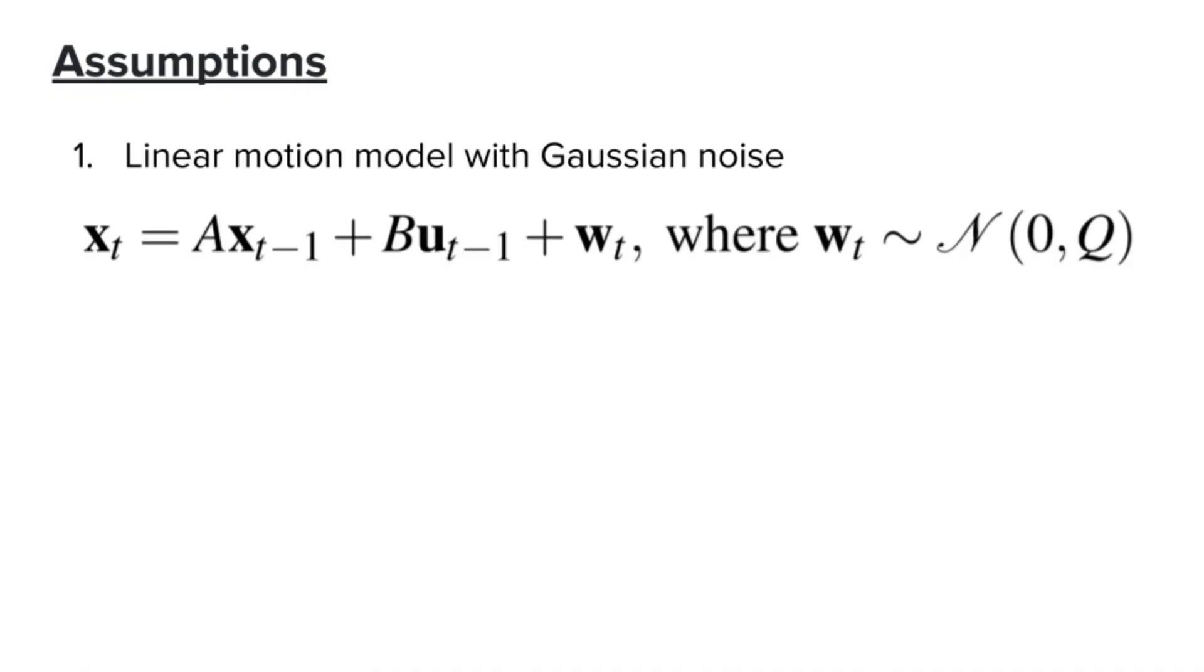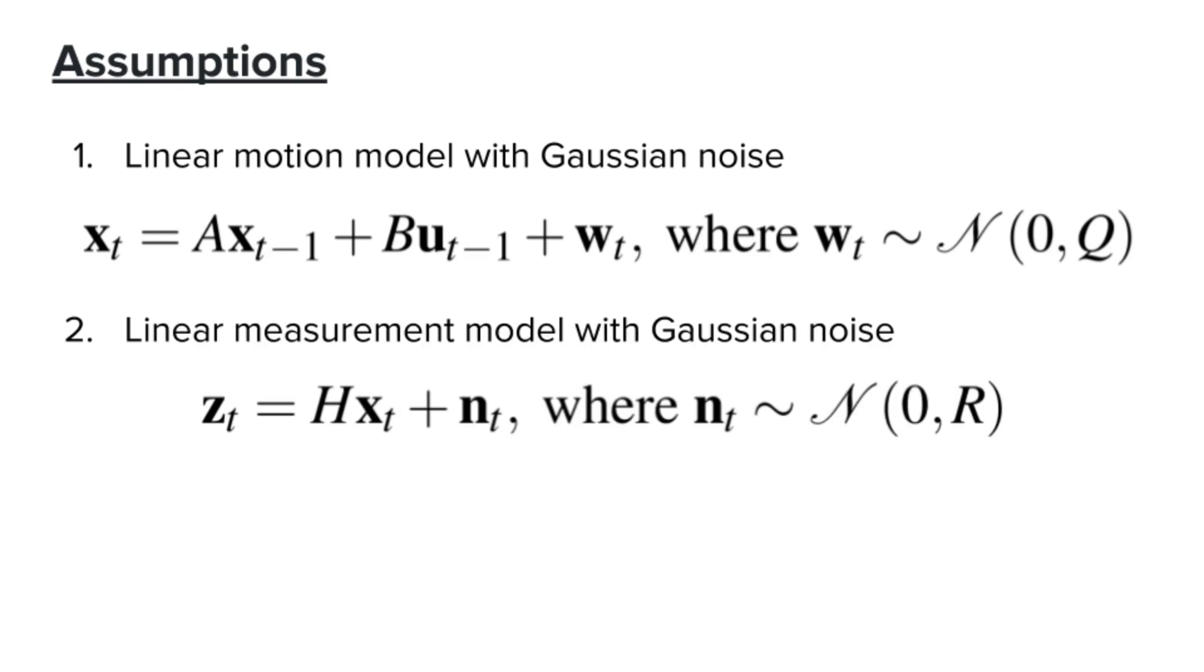Before we talk about equations, let's first talk about the assumptions used in Kalman Filter. First, we assume that our robot has a linear motion model with Gaussian noise. So, we can write the equation that explains how the state changes as we apply a control signal in this form. Second, we also assume the robot to have a linear measurement model with Gaussian noise. Finally, we assume Gaussian prior for the initial state of the robot.